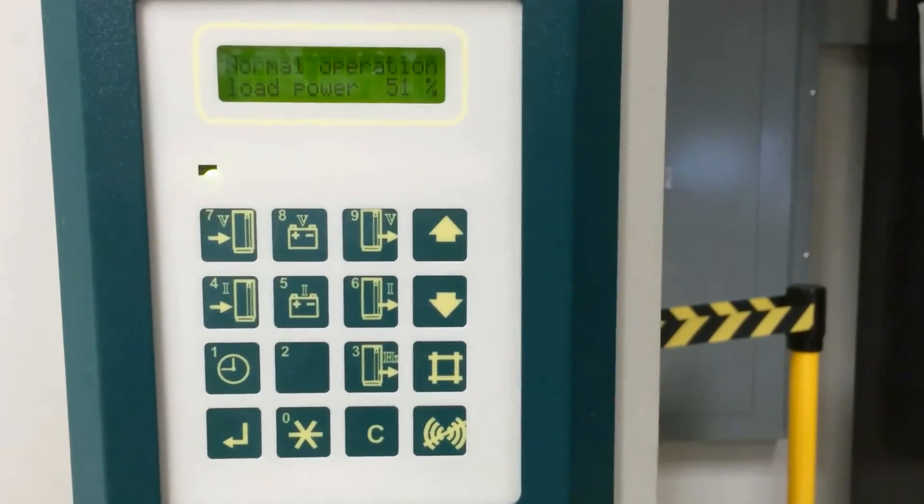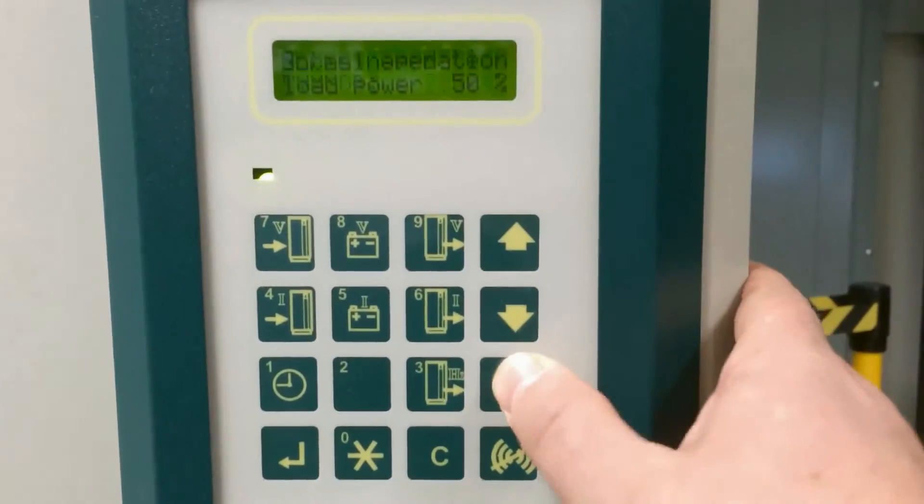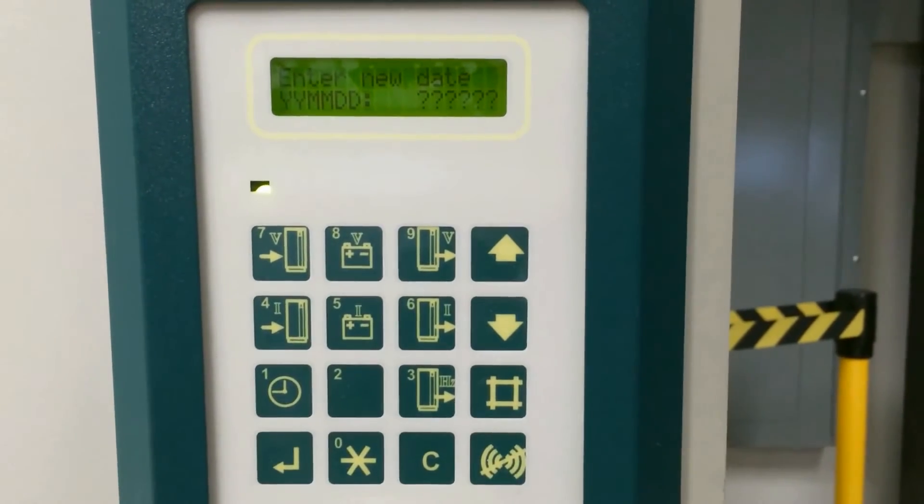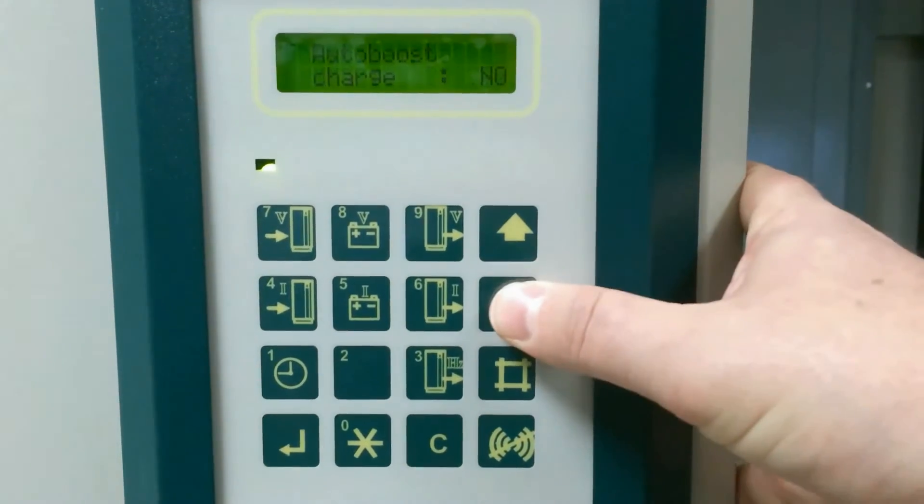So the first thing you're going to do is hit the pound key. You'll notice that it's on enter date, but let's scroll until we find bypass operation.